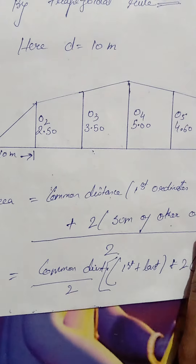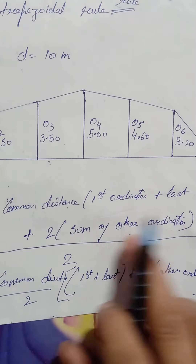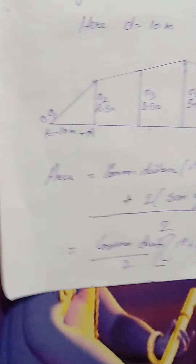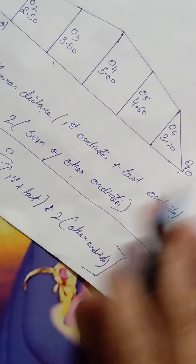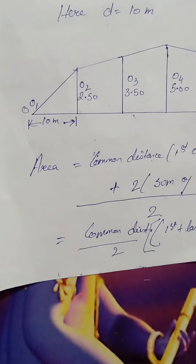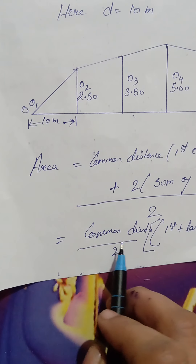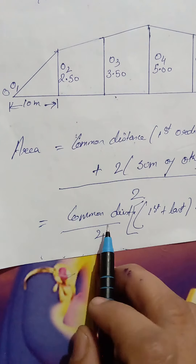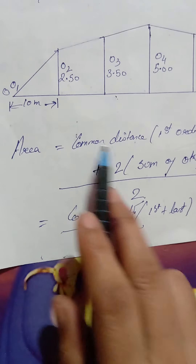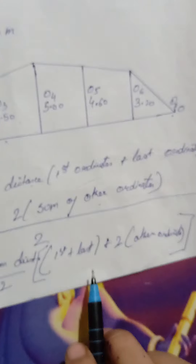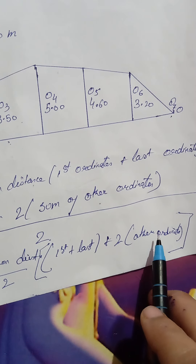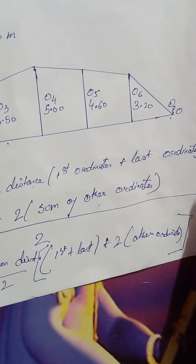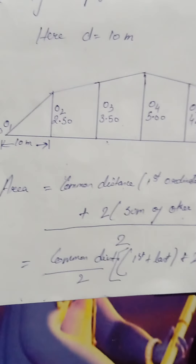So the total area equals L, which is 60 meters — because each interval is 10 meters and we have 6 divisions — multiplied by the average ordinate. This gives the required total area from the average ordinate rule.